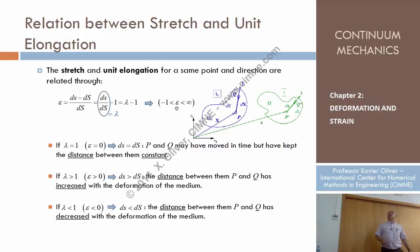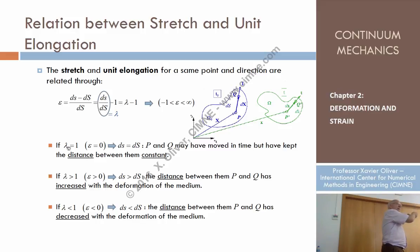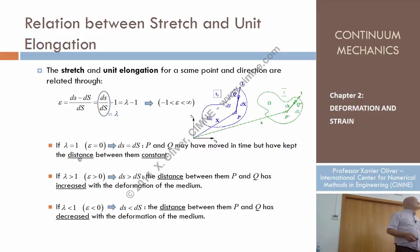That means that the unit elongation takes a minimum value of minus 1. When lambda equals 0, epsilon equals minus 1. When lambda equals infinity, epsilon equals infinity. What implies lambda equal to 1? It means the distance hasn't changed — final differential of s equals original differential of s, ratio is 1 — so the increment of distance is zero, meaning epsilon equals 0. So, elongation equals 0 means there is no enlargement.